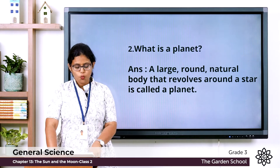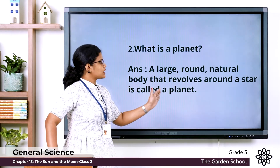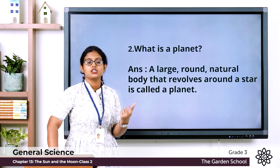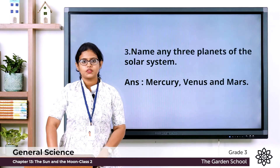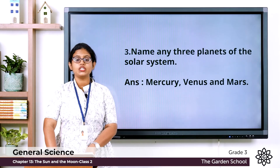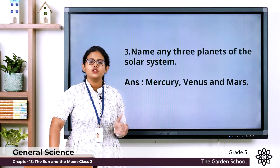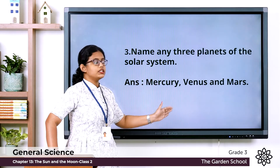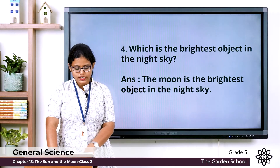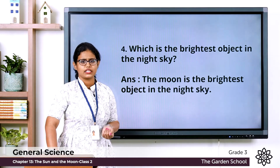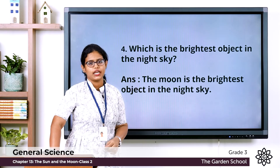Second question: what is a planet? A large round natural body that revolves around a star — here the star is the sun. Third: name any three planets of the solar system. We have eight planets; you can name any three, for example Mercury, Venus, and Mars. Fourth: which is the brightest object in the night sky? The answer is the moon.